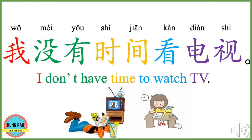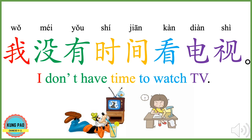我没有时间看电视。 我 means I. 没有 means don't have. 时间 means time. 看 means to see, to look, or to watch. 电视 means TV. 看电视 means watch TV. 我没有时间看电视 means I don't have time to watch TV. Now your turn.